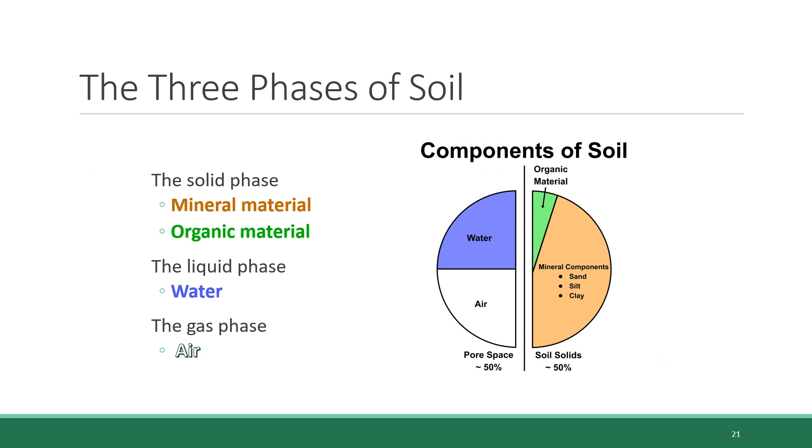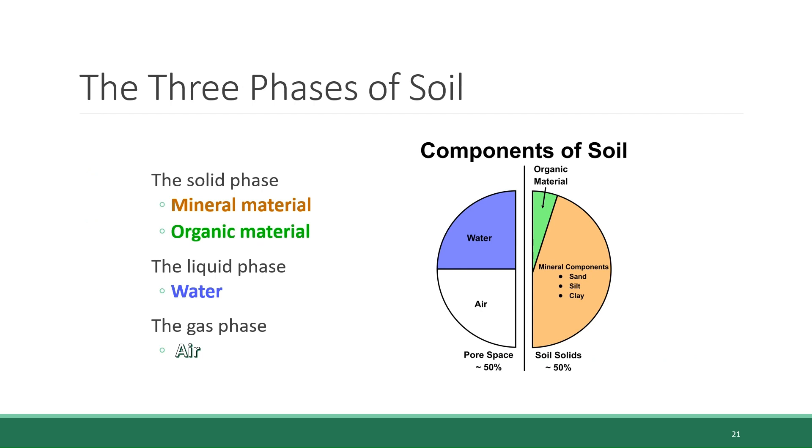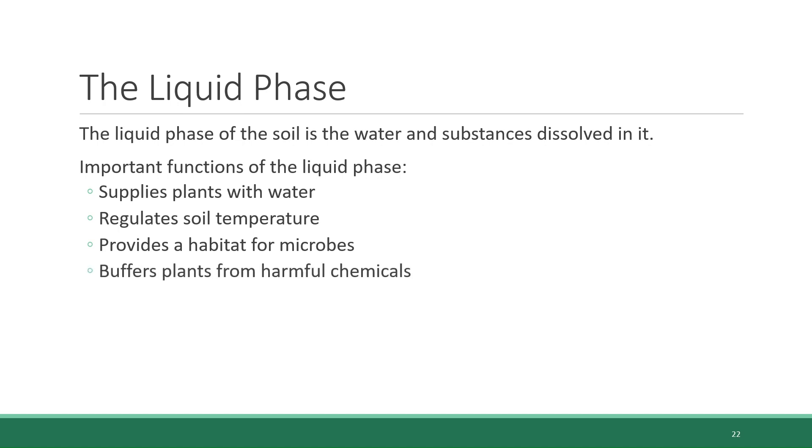Moving on to the next phase of soil, the liquid phase refers to the water that you find in soil and the stuff that's dissolved in that water. Water is crucial to soil for many reasons, including the fact that it supplies plants with water. It regulates the temperature of the soil and keeps it from reaching extreme high or low temperatures. It provides a habitat for microscopic organisms. It buffers plants from exposure to harmful chemicals, and it transports nutrients throughout the soil medium.